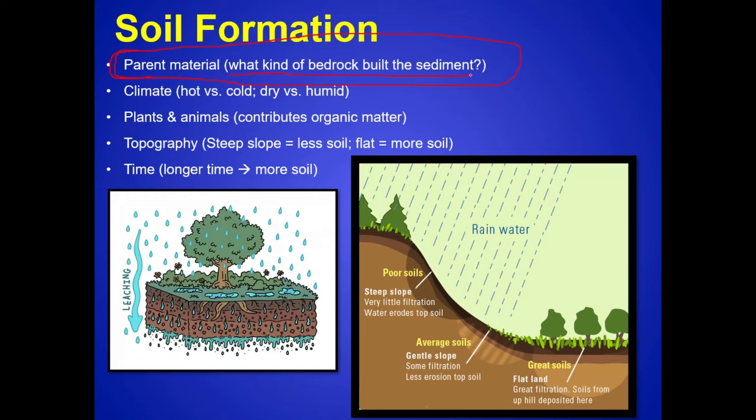Climate can affect soil formation. If it's hot, cold, dry, or humid, all those things affect rates of weathering — rates of chemical weathering, the rate at which iron breaks down into iron oxide, the rate at which feldspar breaks down and creates clays. Plants and animals also make a big difference because those are the contributions to organic matter, and organic matter is so important for plants.